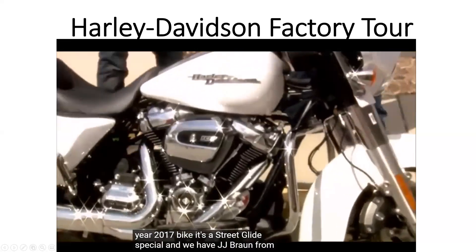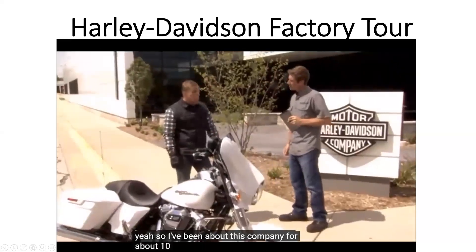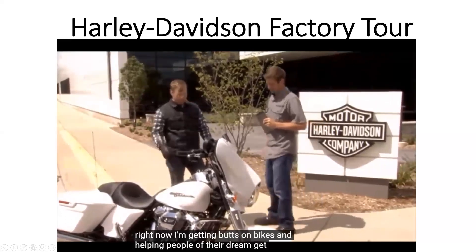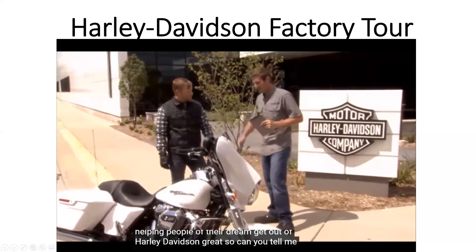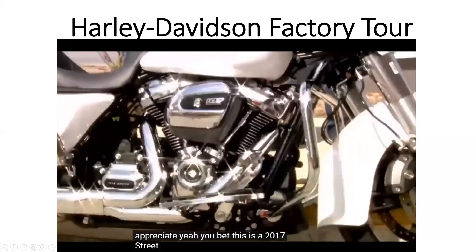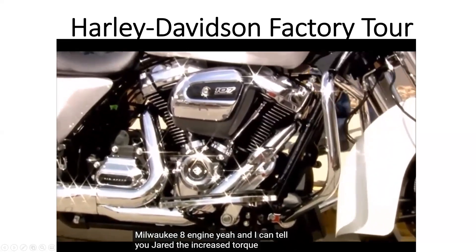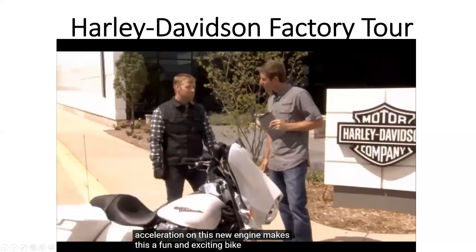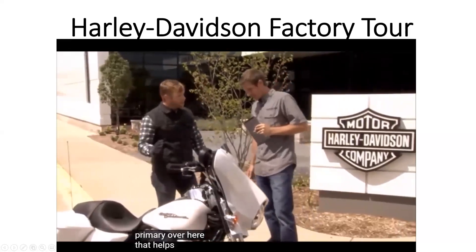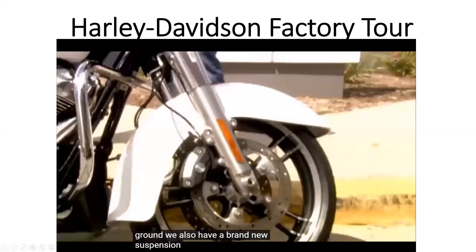We have JJ Braun from our events team here. I've been with this company for about 10 years and currently work in marketing. Me and my team are focused on getting people on bikes and helping them live their dream and get on a Harley. This is a 2017 Street Glide Special — it boasts the all-new Milwaukee 8 engine. The increased torque and acceleration on this new engine makes this a fun and exciting bike to ride. We've got a slimmer primary that helps consumers put their feet flat on the ground, and a brand new suspension front and rear on this platform.